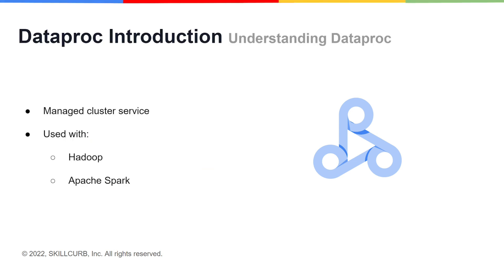Dataproc is a managed cluster service within GCP that is used for running Spark and Hadoop jobs. It takes away the major management elements of handling clusters, VMs, and storage by yourself and takes those tasks upon itself, so you can worry about the jobs themselves. Dataproc will set up the managed service and all you'll have to do beyond that point is send jobs to it.